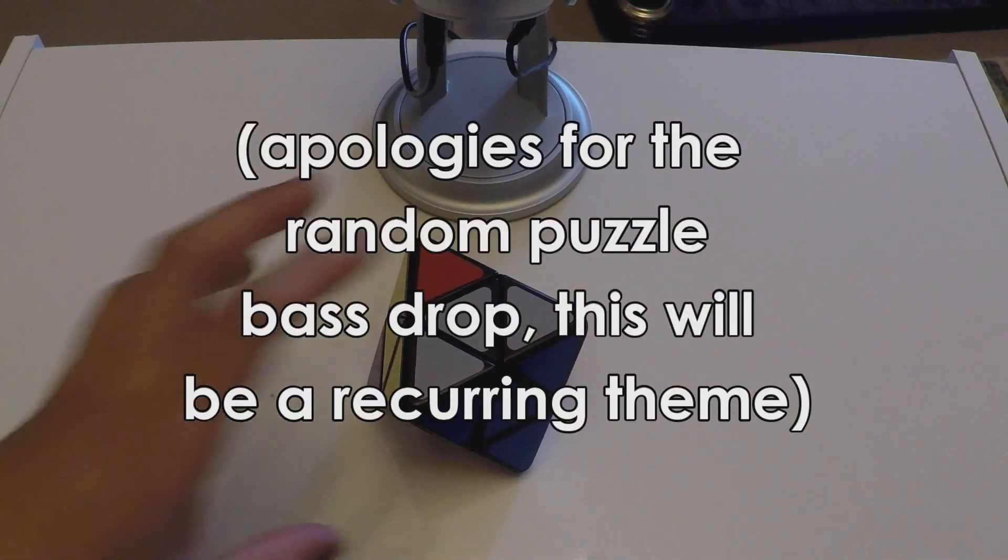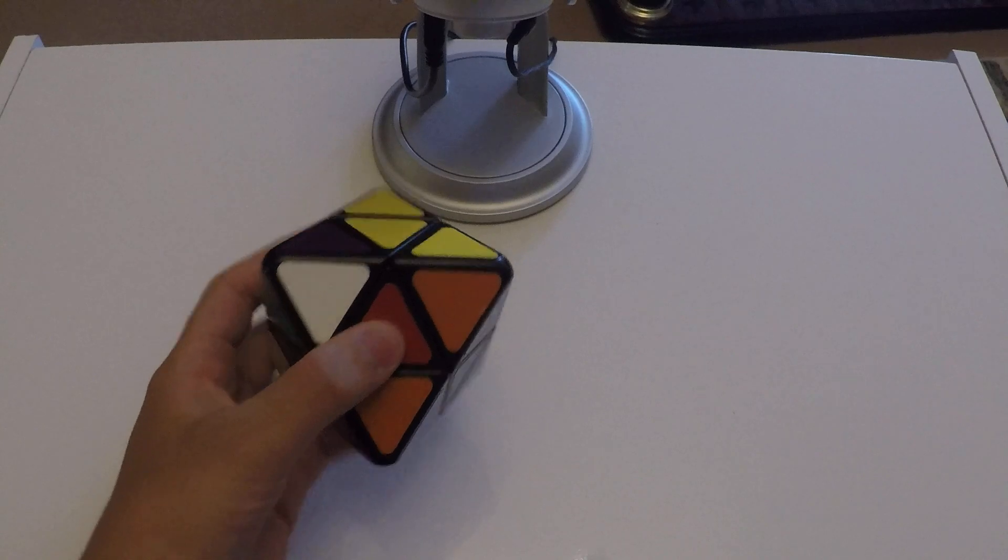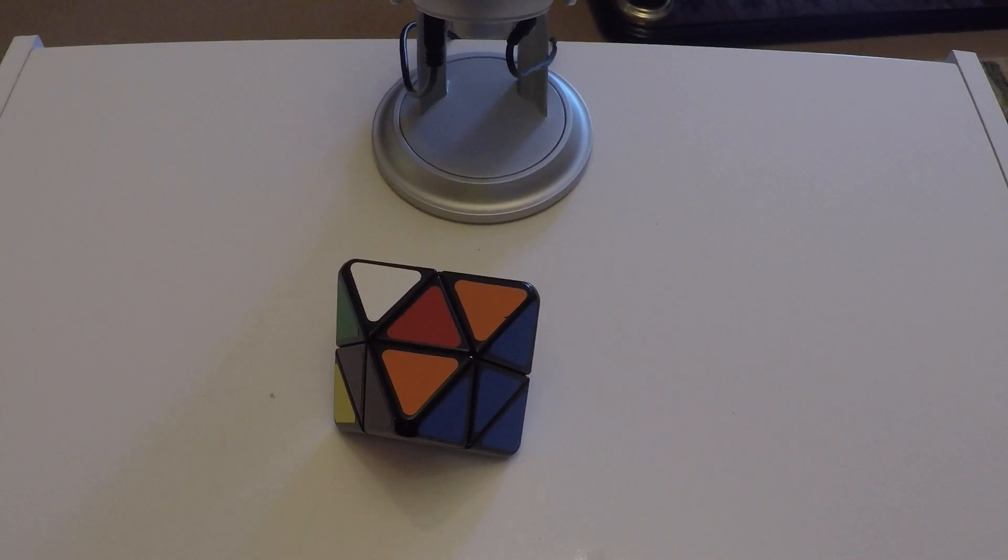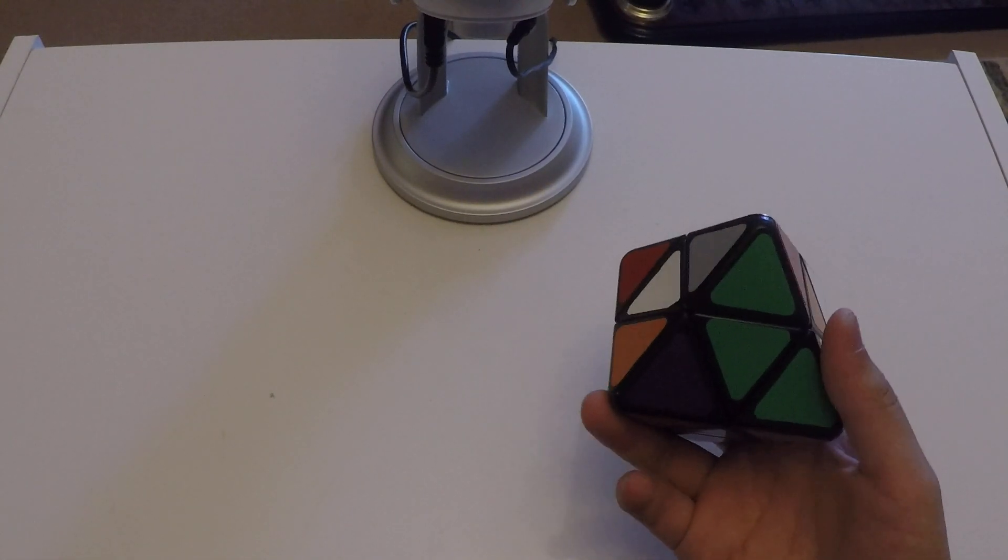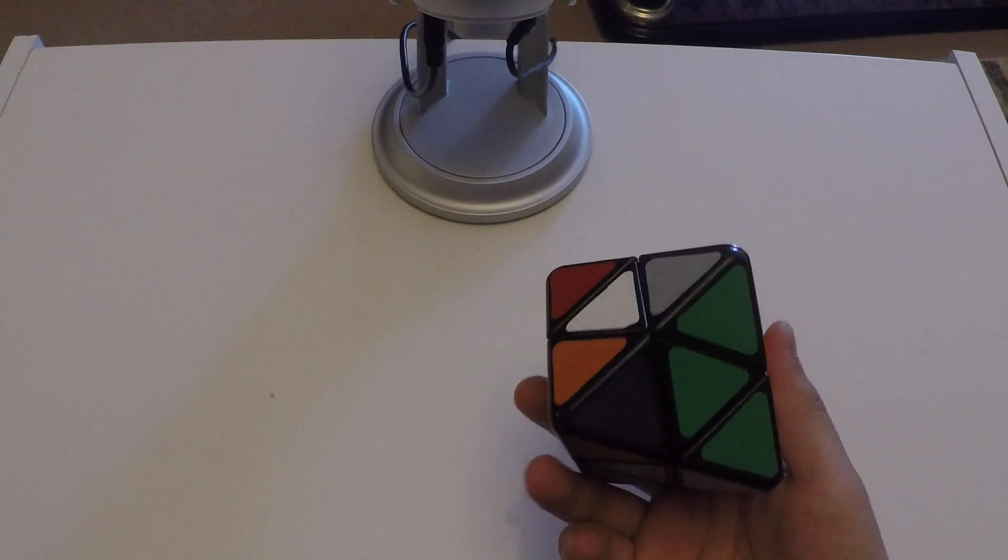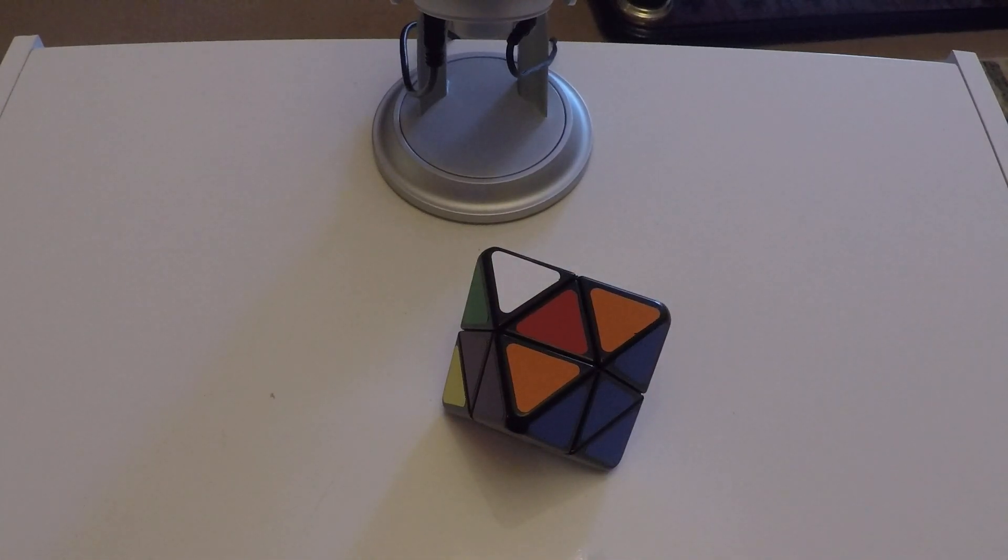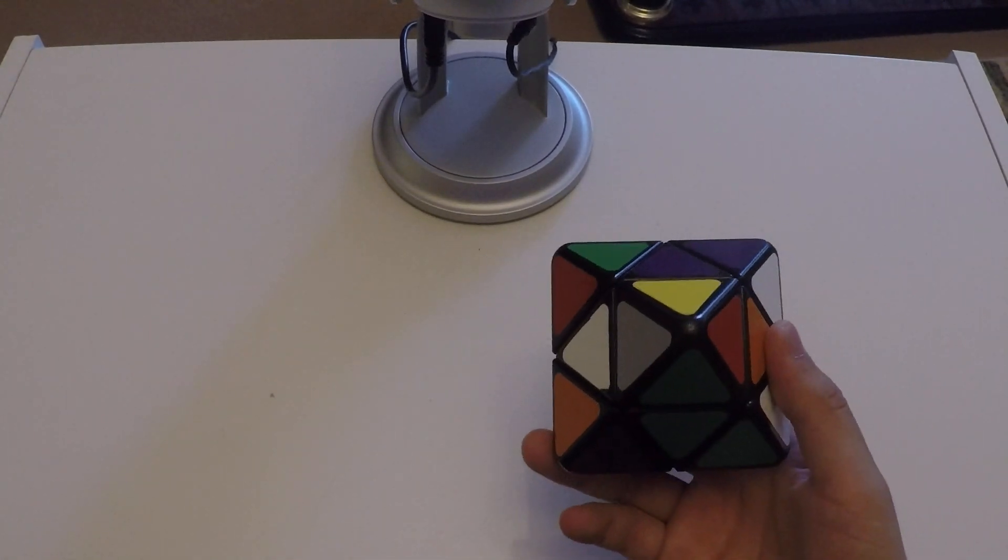Starting off with number five we have this Scoop thing, Scoop diamond, I don't even know what you call this. There was some guy called Oscar at some competition in 2016 that wanted to give this away for free and nobody wanted it for some reason. I was just like this is a free puzzle, why not? He gave it to me and it's been lying on my shelf ever since.